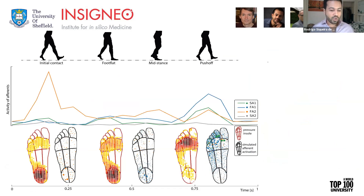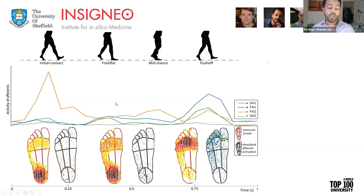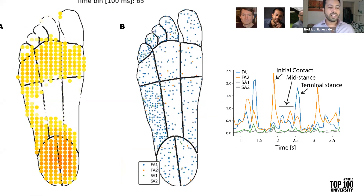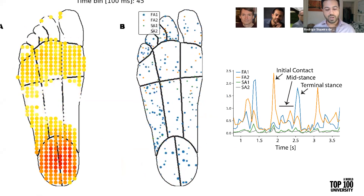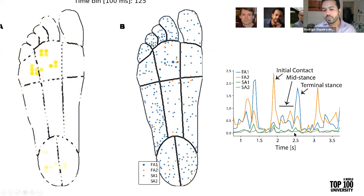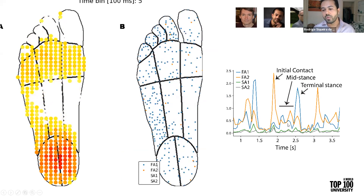We found that for all the phases of the step — initial contact, flattening of the foot, mid stance, and push off — you have different activations of each one of those different classes. Looking at the bottom of the image, you have two foot sole pairs: the red ones are the heat maps of the pressure-sensitive insoles showing how pressure is distributed, and the black ones show the activation of the actual afferents. We can see that on the initial contact there is a burst of FA firing, which was something that was not previously known — a good indication that we can use the model to experiment in ways that wouldn't be possible using microneurography.